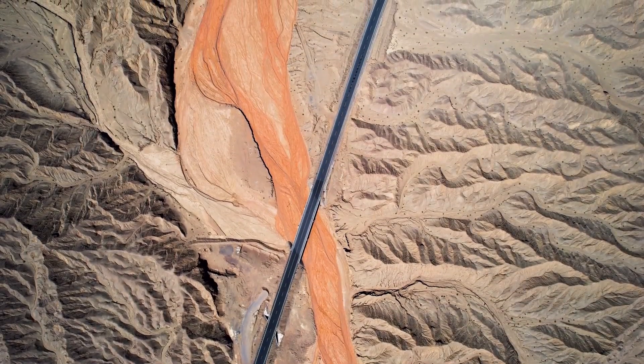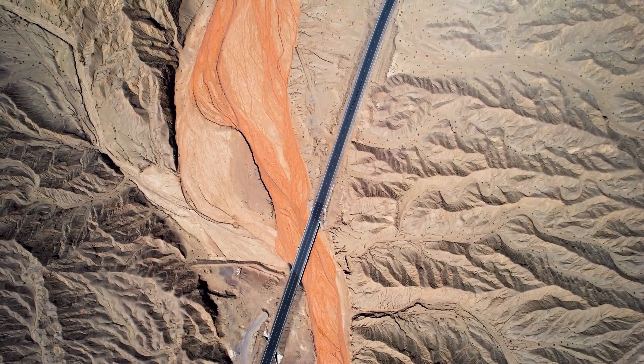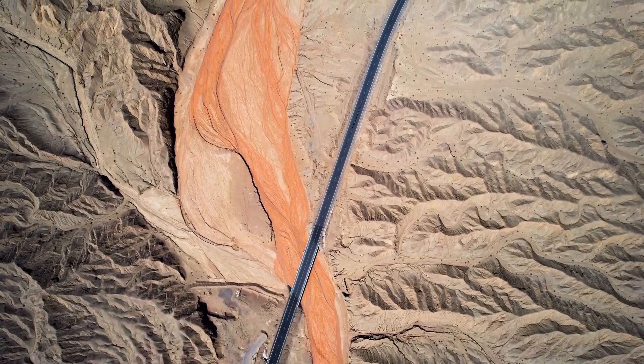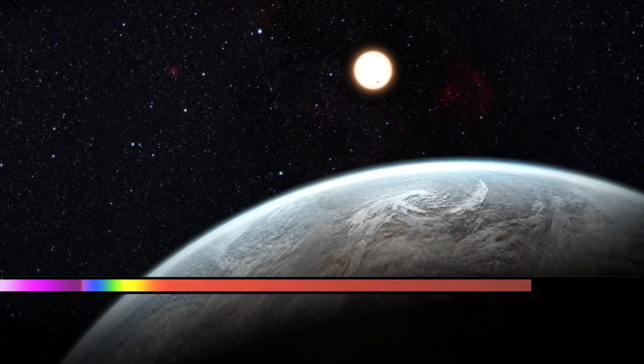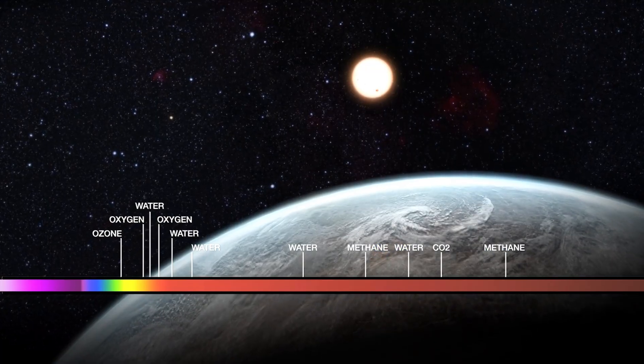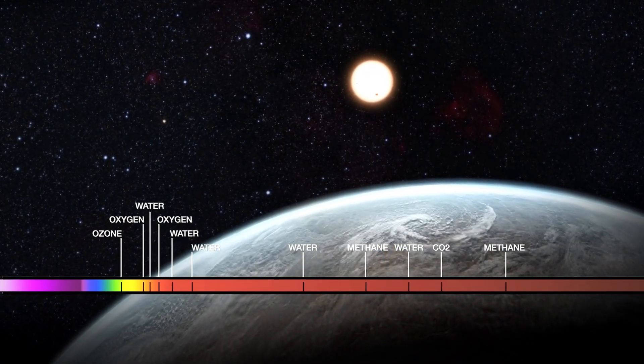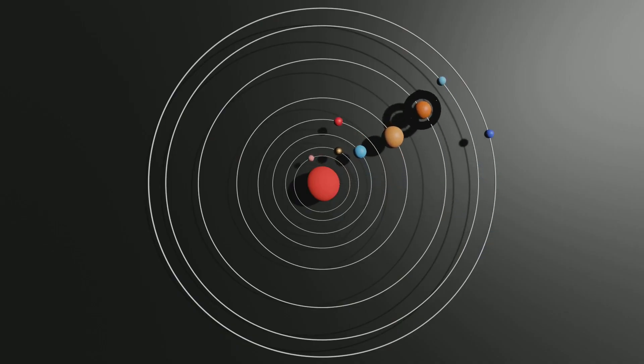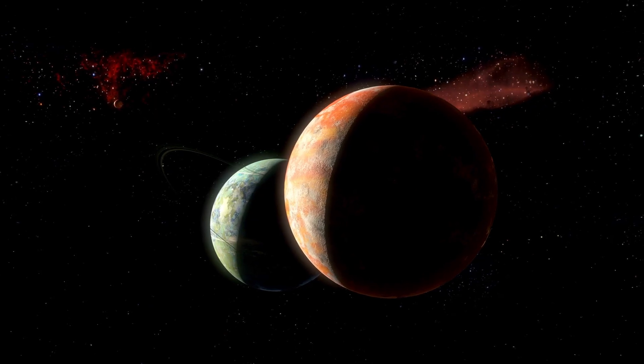Statistical studies suggest that around 22 percent of sun-like stars may harbor Earth-sized planets in their habitable zones. That means that in our own galaxy alone, there could be billions of potentially life-supporting worlds. With such overwhelming numbers, the probability that Earth is unique in hosting intelligent life seems to shrink with every new discovery.